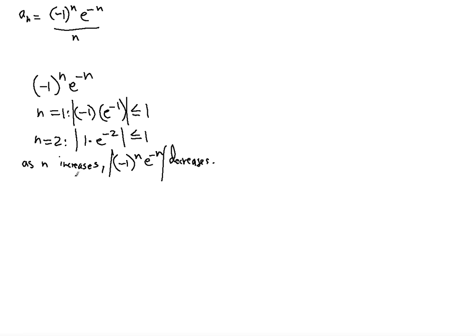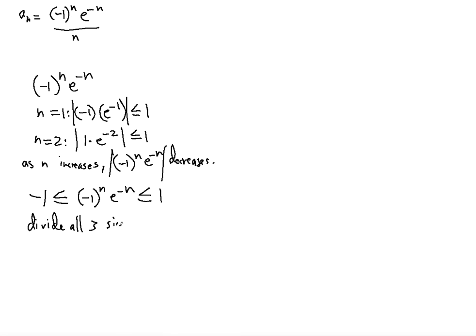Using the properties of absolute value inequalities, we have: negative 1 is less than or equal to (-1)^n · e^(-n) is less than or equal to 1. To match the original sequence, we divide all three sides of the inequality by n, giving us: negative 1 over n ≤ (-1)^n · e^(-n) / n ≤ 1 over n.